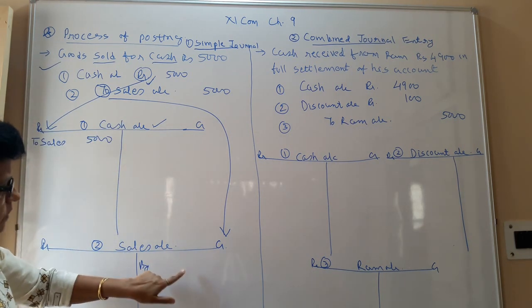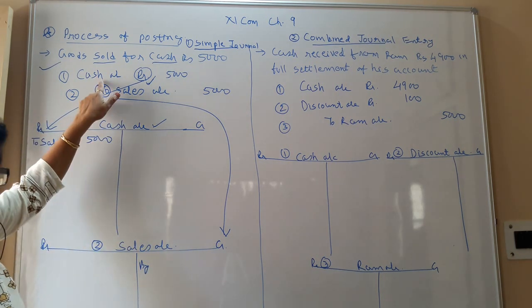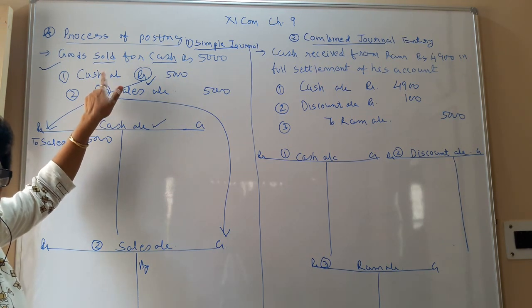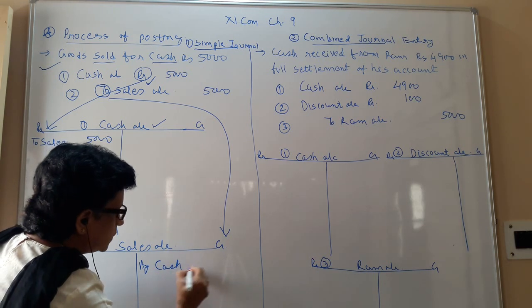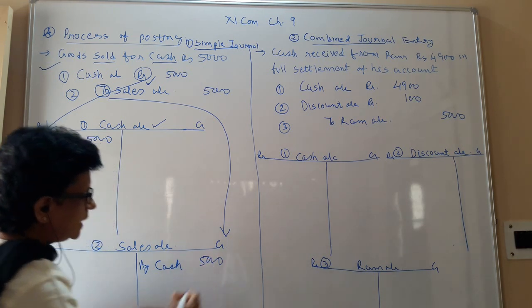When you have sold the goods, what you have received? Is it a cash sales or a credit sales? It is a cash sales. So here: by cash, the opposite account. Rupees 5,000.